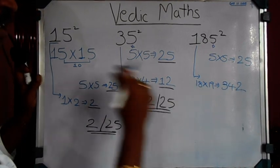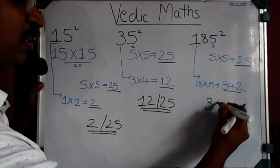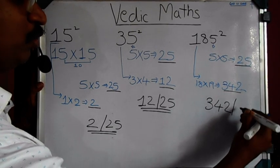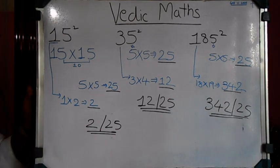Then you just have to bring these two numbers together: 342 and 25. The answer is 34225. Thank you.